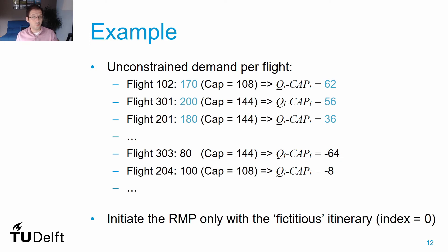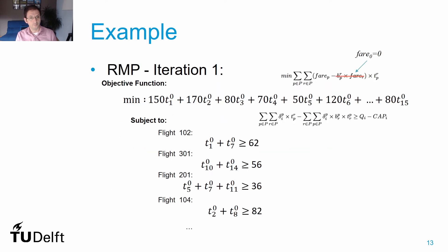We can see we need to remove 62 passengers from Flight 102, 56 from Flight 301, and 36 from Flight 201. On the other hand, there won't be any problem with Flights 303 and 204 — they have capacity higher than unconstrained demand, so they can be used to recapture some passengers from other flights. We initiate our RMP with only the decision variables related to the fictitious itinerary, which we again call itinerary zero. The objective function in this initial RMP is the sum of the fares of the itineraries multiplied by the respective decision variables that allow us to spill passengers — representing the revenue lost if we spill a passenger. The fare associated with the fictitious itinerary is zero; we make no money with those passengers.